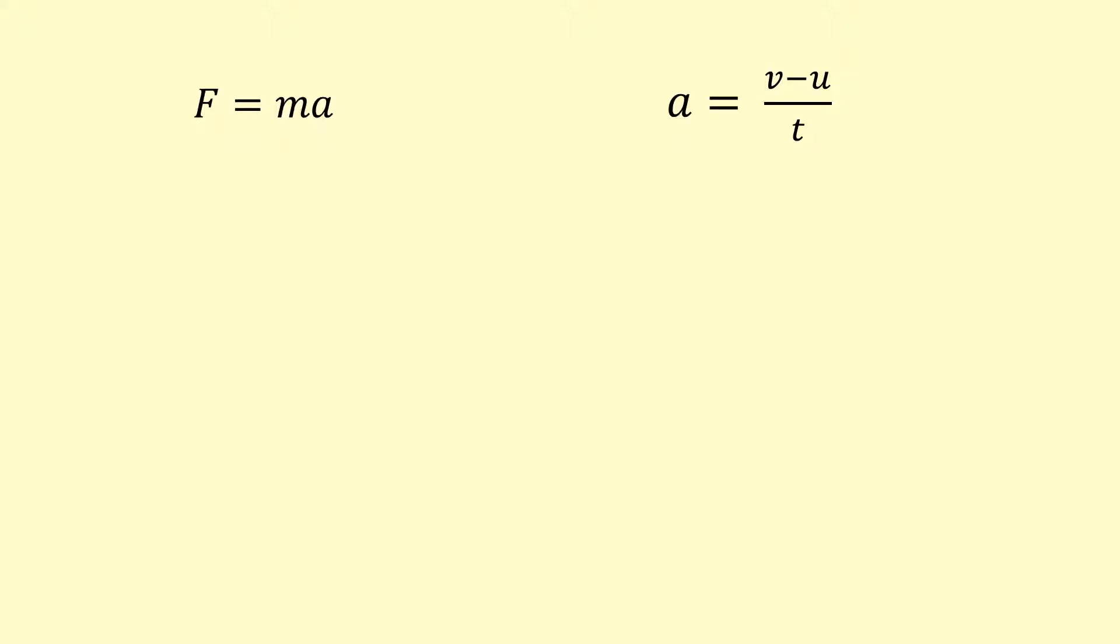Here we have Newton's second law, F equals ma, and the definition of acceleration, which is change in velocity over the time taken. If I substitute this acceleration for a here, I get this equation F equals mv minus u over t.